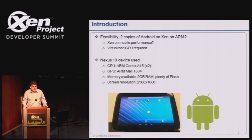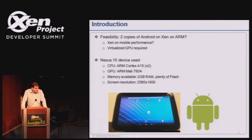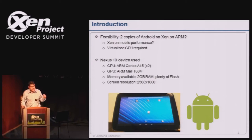Memory is a constraint — we have two gigabytes of RAM on the Nexus 10. We have plenty of flash to run two Androids. The screen resolution on the Nexus 10 is very high — about four times the resolution of a smartphone. So when we virtualize the GPU and get the second Android running, we are stressing our system. It's kind of the worst case.